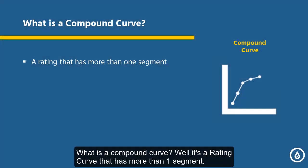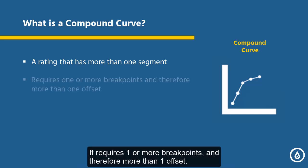What is a compound curve? Well, it's a rating curve that has more than one segment. It requires one or more breakpoints, and therefore more than one offset.